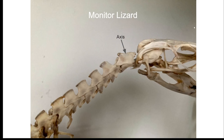Although amphibians have an atlas, they do not have an axis due to the atlas being their only cervical vertebra. In reptiles and birds, like this monitor lizard here, the axis doesn't appear significantly different from the other cervicals other than the presence of the odontoid process.